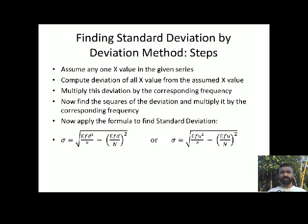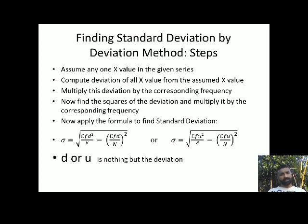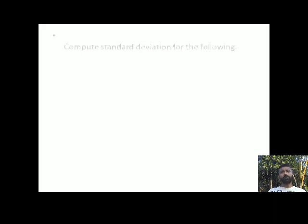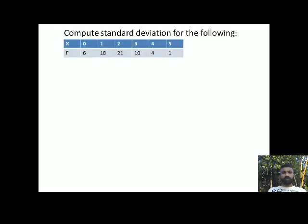Let us take up a problem. In this problem, x and frequency both are given. x is 0, 1, 2, 3, 4, 5 and the frequencies are 6, 18, 21, 10, 4, 1. We need to find the standard deviation by following the deviation method.